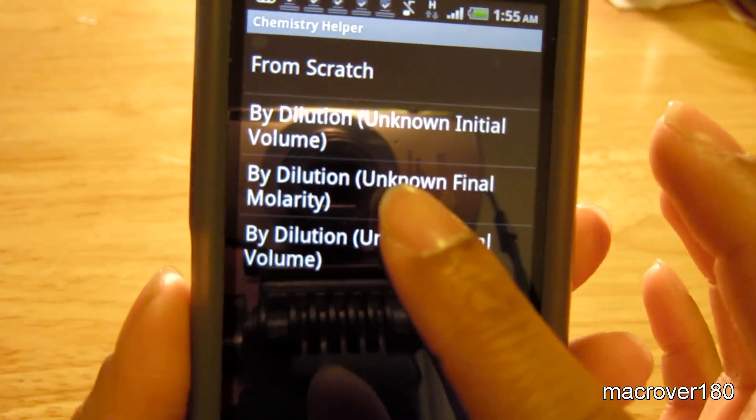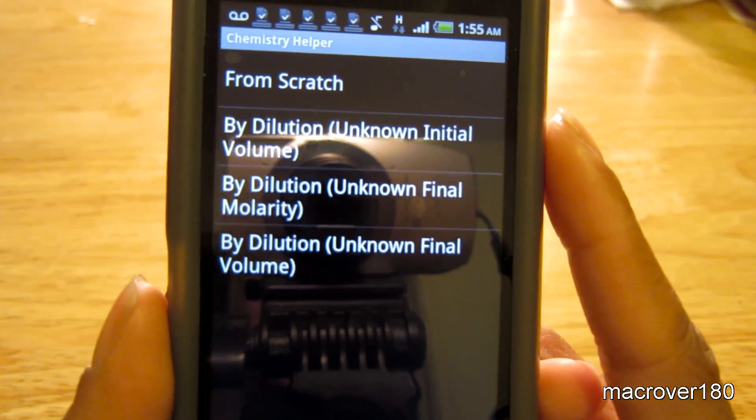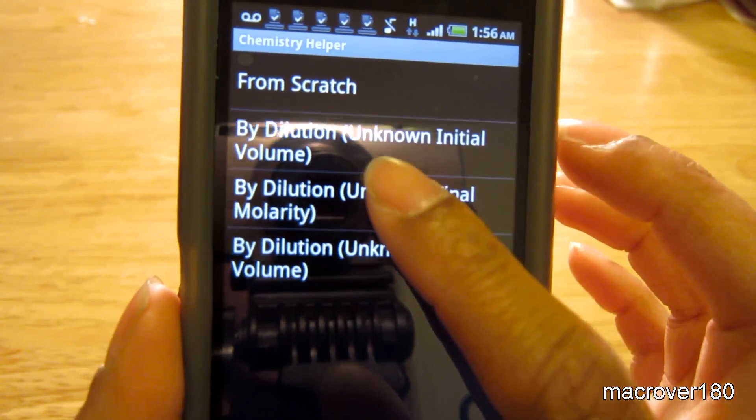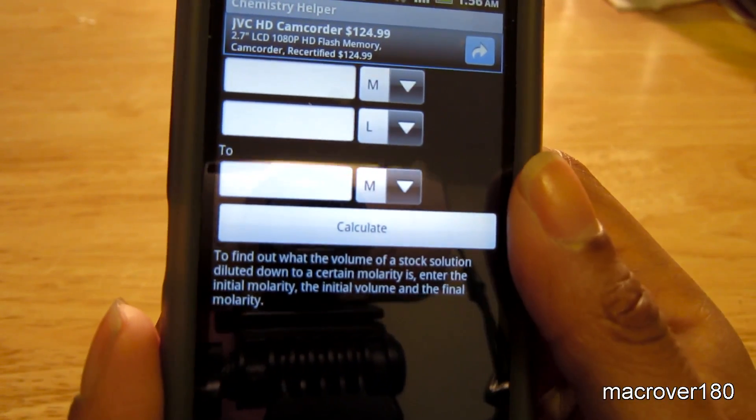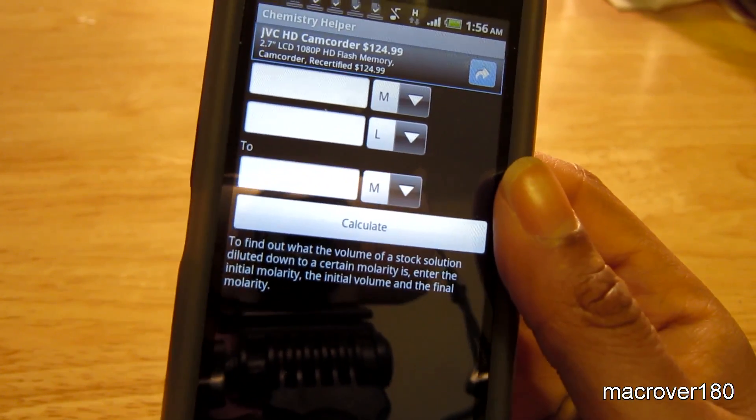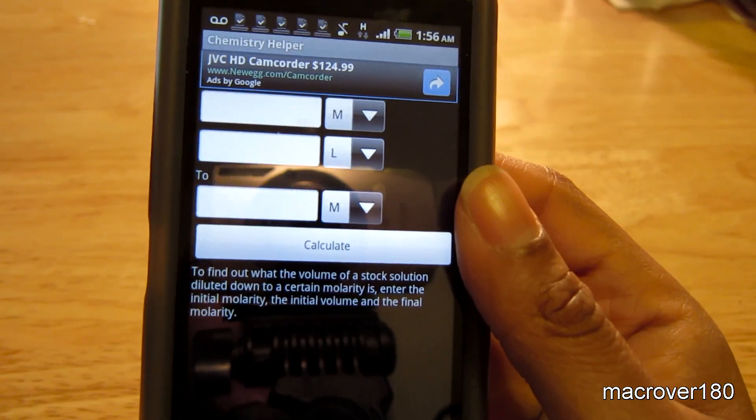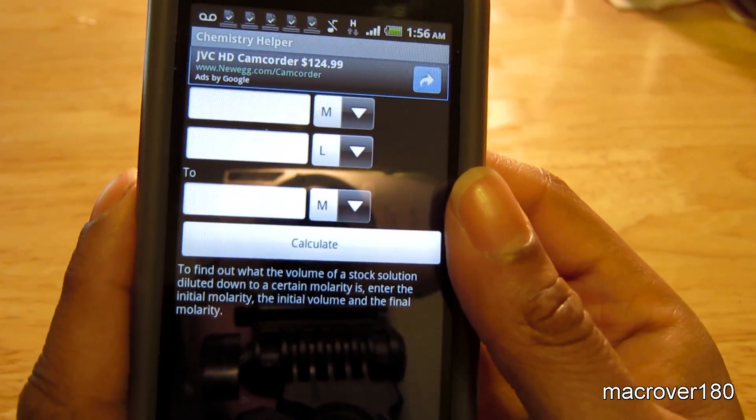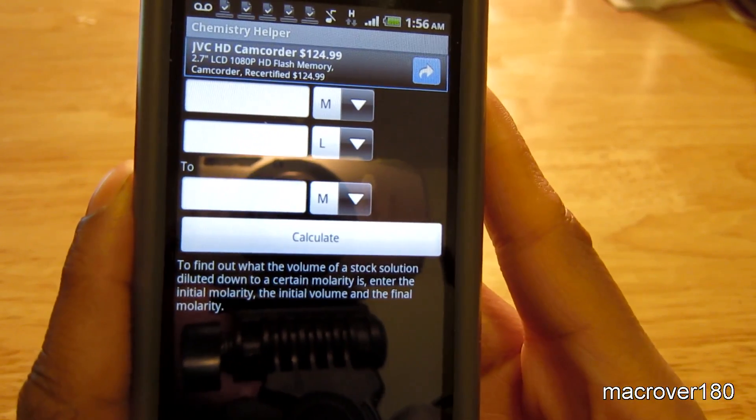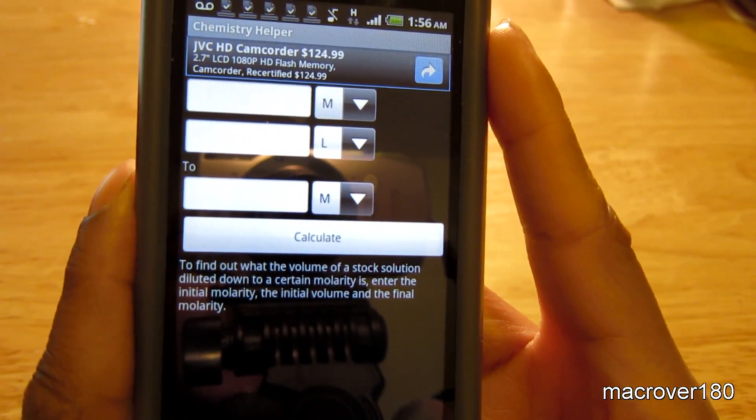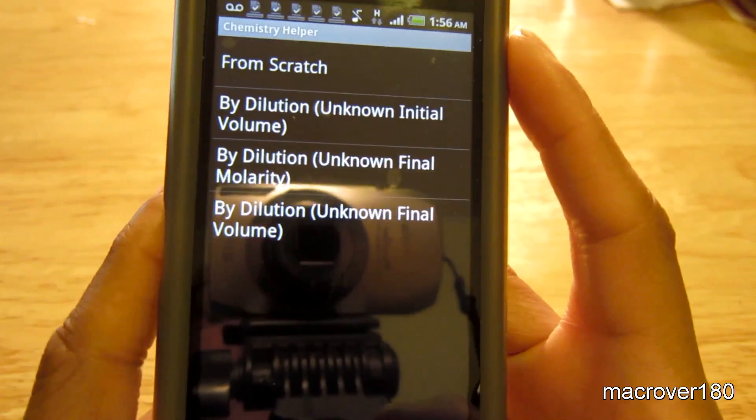If you want to find by dilution using the unknown final molarity, press it here. And it says to find out what the volume of a stock solution diluted down to a certain molarity is, enter the initial molarity, the initial volume, and the final molarity.